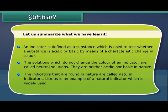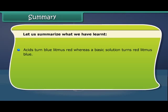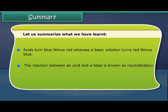Litmus is an example of a natural indicator which is widely used. Acids turn blue litmus red, whereas a basic solution turns red litmus blue. The reaction between an acid and a base is known as neutralization.